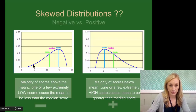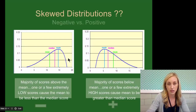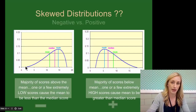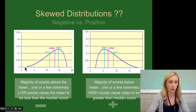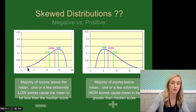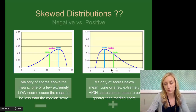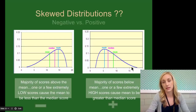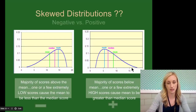In a skewed distribution, the skew or tail is where very few people are scoring — that's where your outliers and extreme scores are. In a negative skew, the extreme outlier is on the negative or lower end; the majority of scores are actually above the mean on the higher end, while one or a few extremely low scores cause the mean to be less than the median. In a positive skew, the majority of scores are below the mean, and one or a few extremely high scores draw the mean away from the median toward the top end.